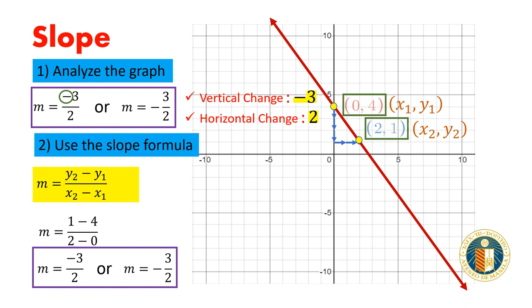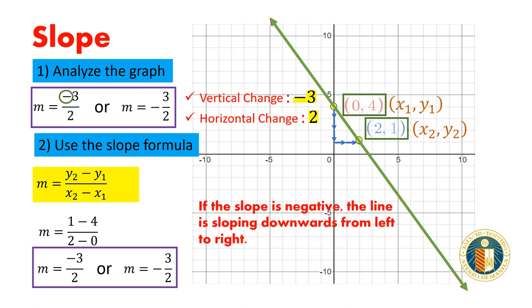The last thing to notice is that since the slope is negative, the line is sloped downwards from left to right. Note that this is always true when the slope is negative.